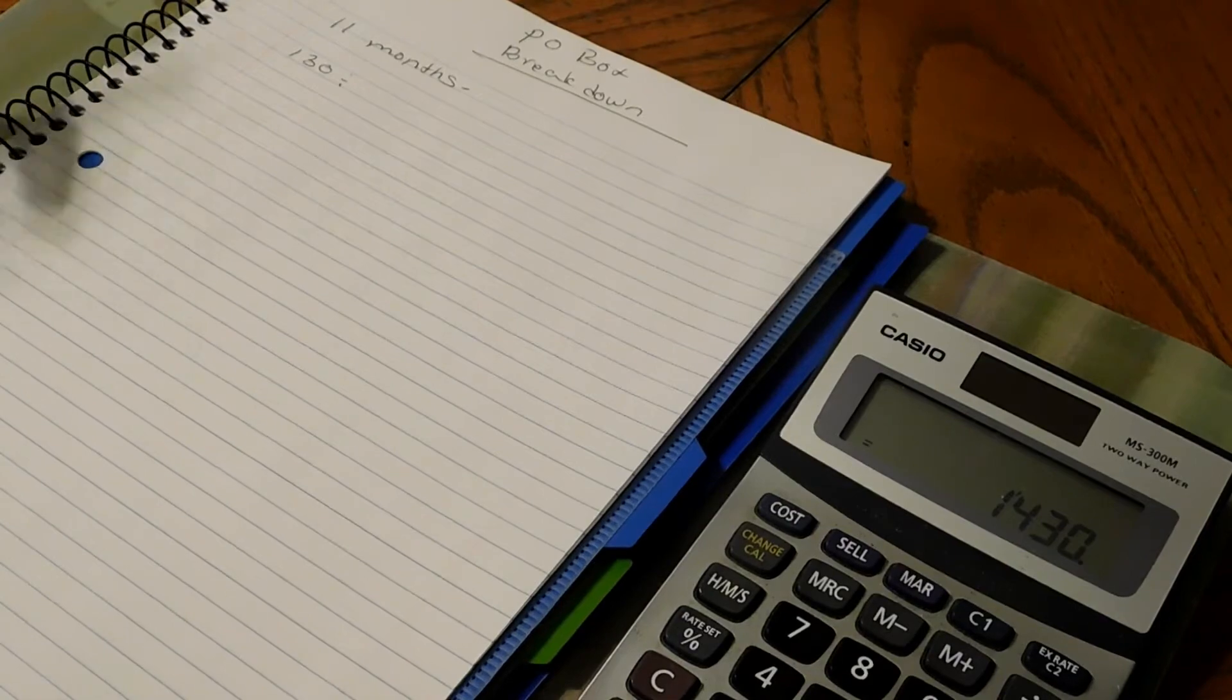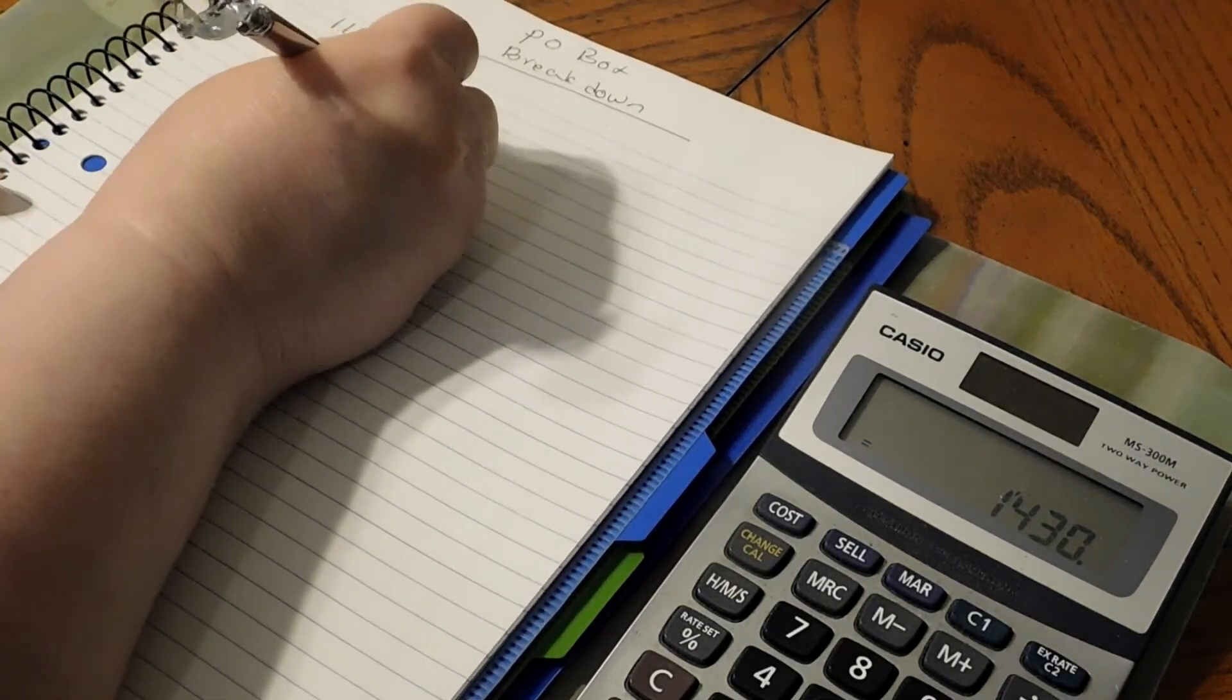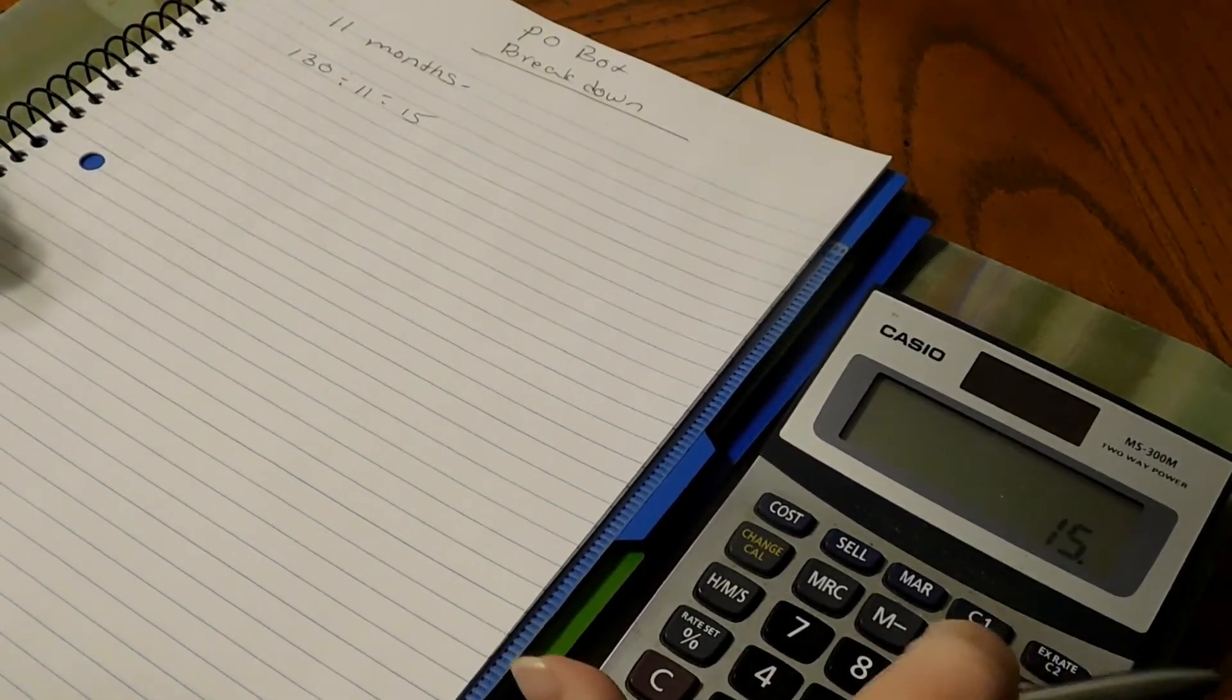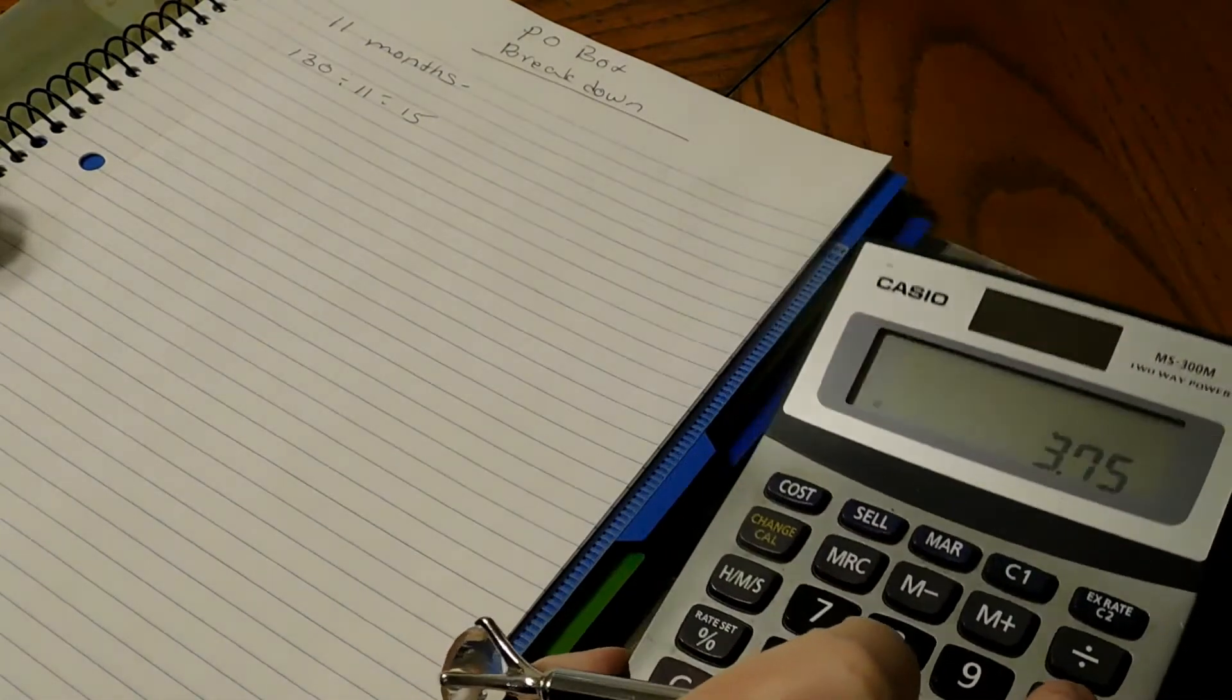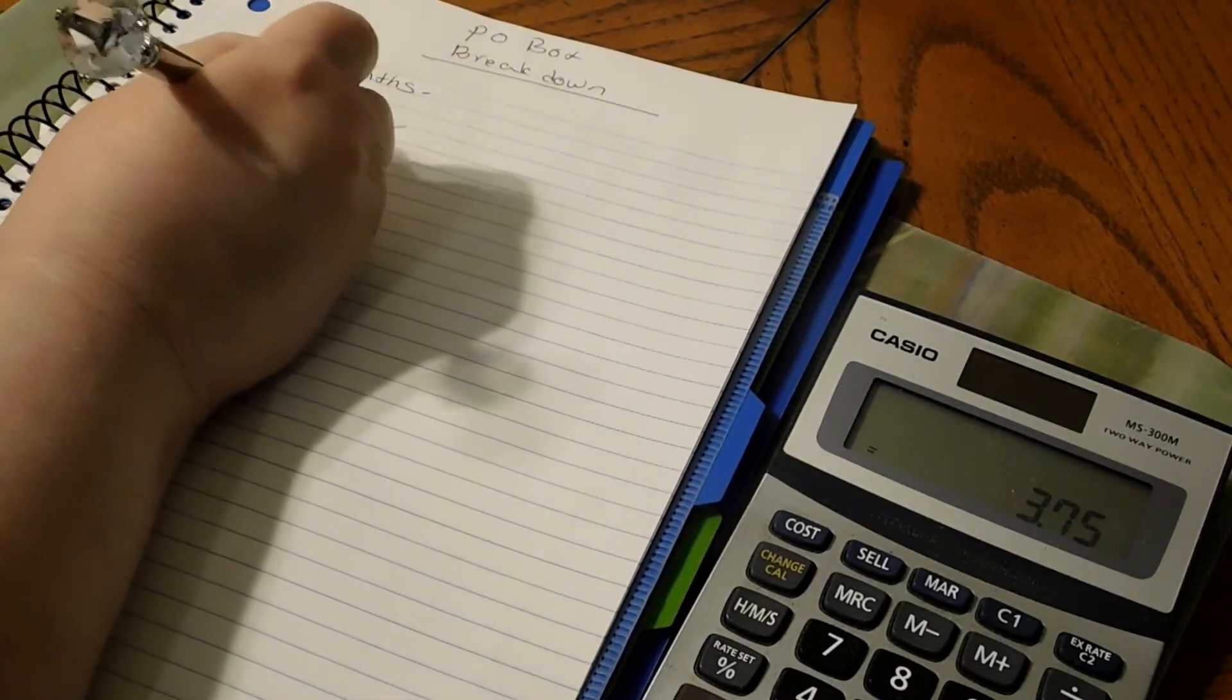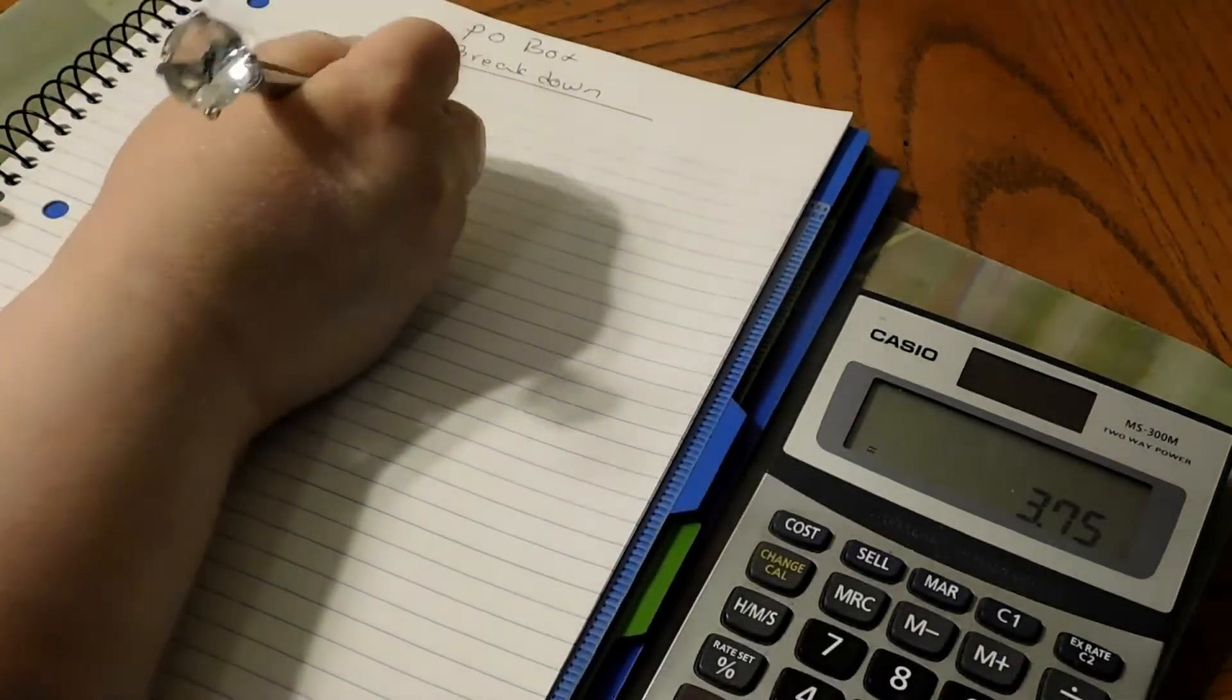So we're just going to up it to $15. Now we're going to take this $15 and we're going to divide that by four weeks in the month and it comes out to $3.75.